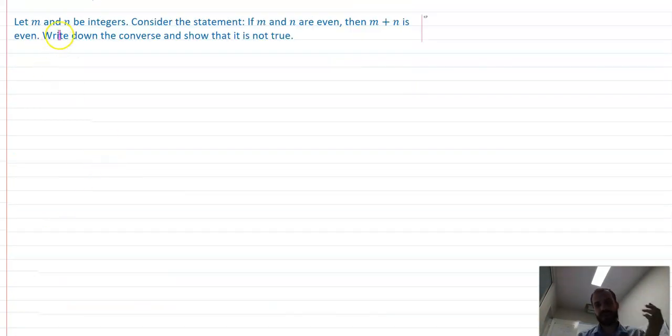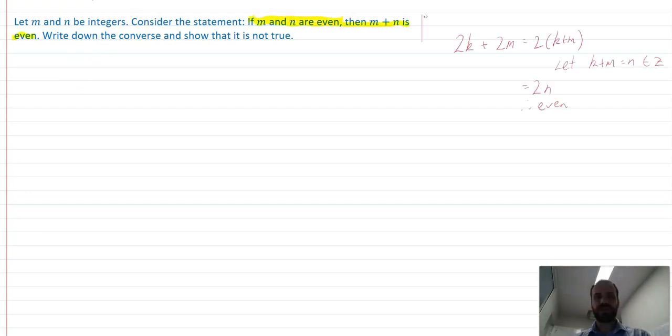All right, so let M and N be integers. Consider the statement, if M and N are even, then M plus N is even. So I've considered it. Not only did I consider it, but I also proved it here. If you've got two even numbers, then M plus N will be also even. That's a very simple proof.